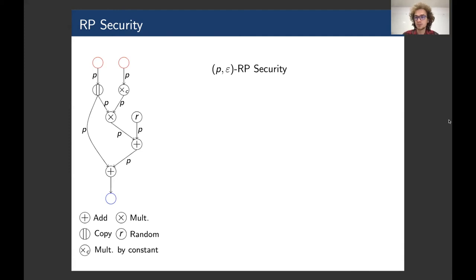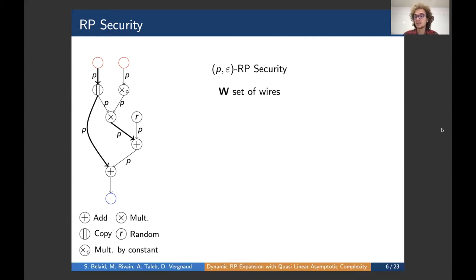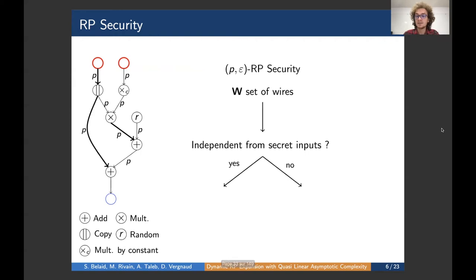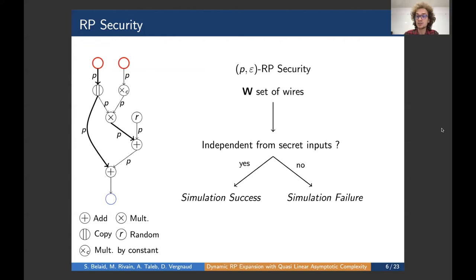Let me illustrate what random probing security is. On the left is a toy circuit with five gate types: addition, multiplication, copy, random gates, and multiplication by a constant. In the random probing model, each wire leaks with probability p—we consider a set of leaking wires where each wire is added to the set with independent probability p. We need to simulate the distribution of these wires without knowledge of the secret inputs, implying the wires are independent of the secret. If this holds, we have a simulation success; otherwise a simulation failure, which should occur with probability ε. A circuit is said to be (p, ε) random probing secure if any set of leaking wires satisfies this definition.